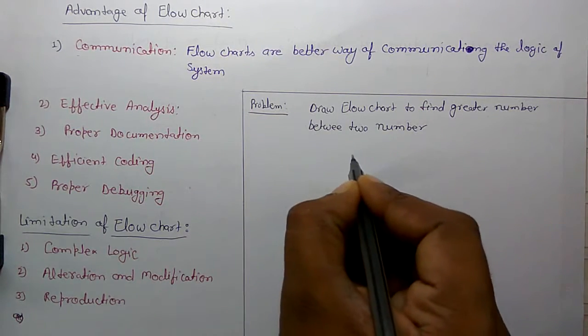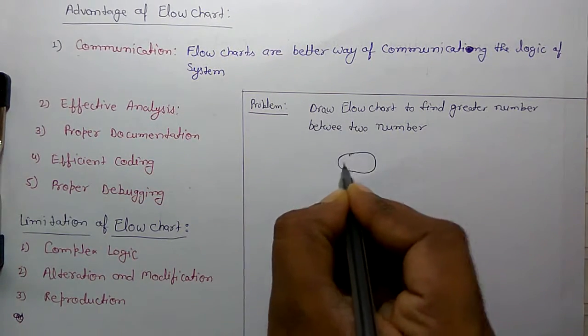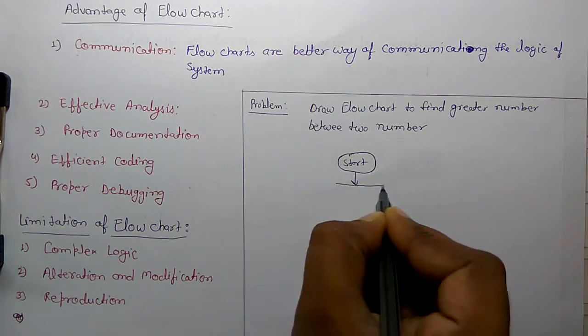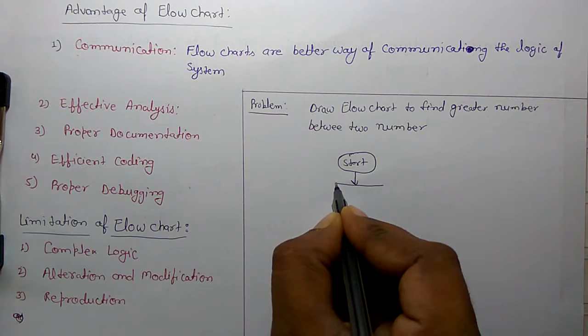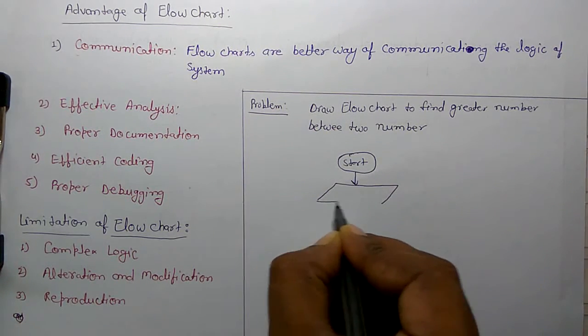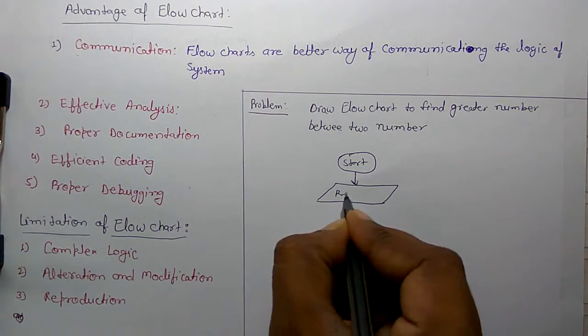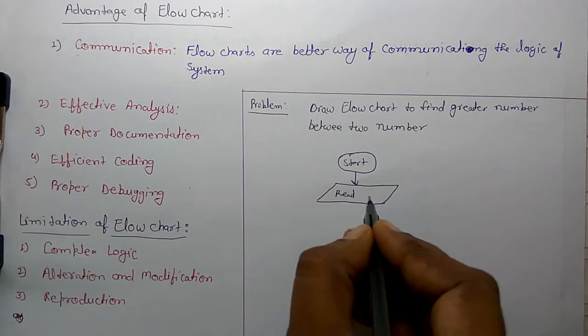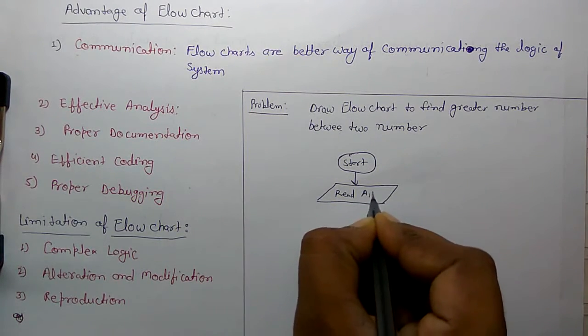First you have to start. Then next, input both numbers. For that, symbol is parallelogram. So read, or for input you may write read input a comma b.